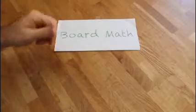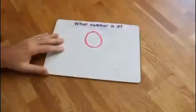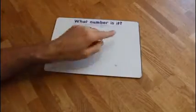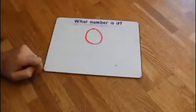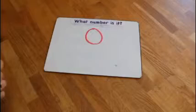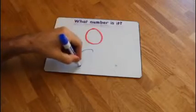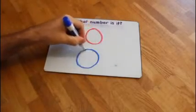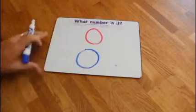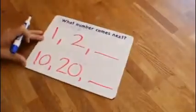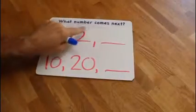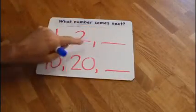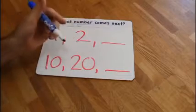Read it with me boys and girls. What number is it? Zero. How do we write a zero? Around and around we go, when we get back that's zero. What comes next? One, two, three. How do we write a three? Around the tree, around the tree, that's the way to write a three.